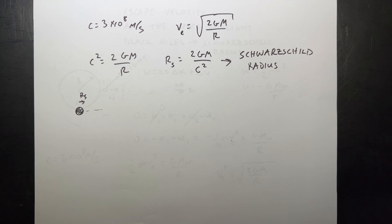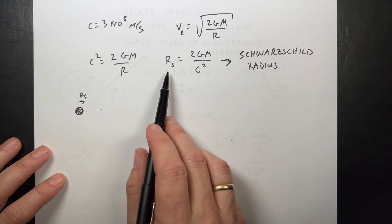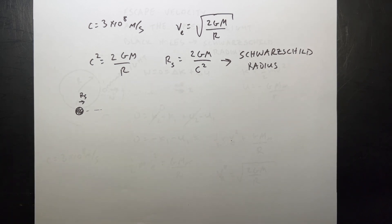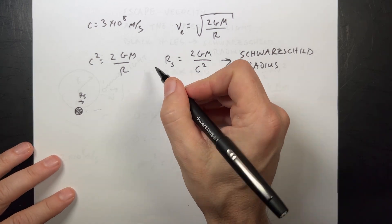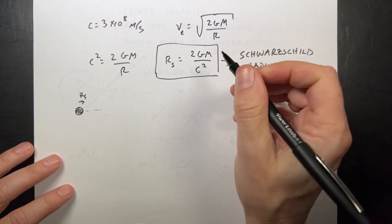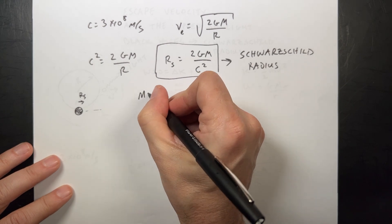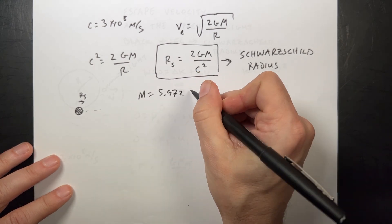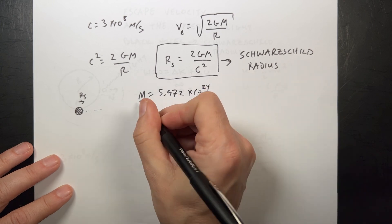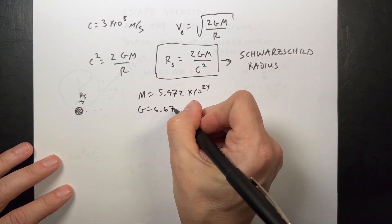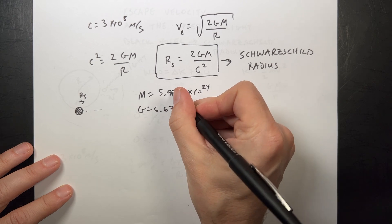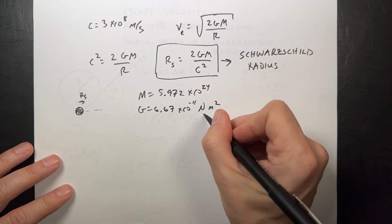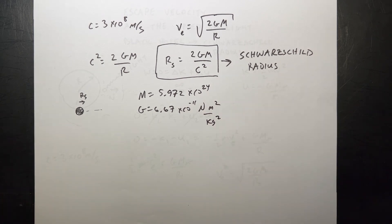So let's calculate how big the Earth would have to be. How much you'd have to crunch it down to get a black hole. Because you can make a black hole out of anything if it's small enough. And that's what this is. So that's kind of cool. It's fun. So let's say the mass of the Earth is 5.972 times 10 to the 24th. And then G is 6.67 times 10 to the negative 11th newton meters squared per kilograms squared. And then c is the speed of light.